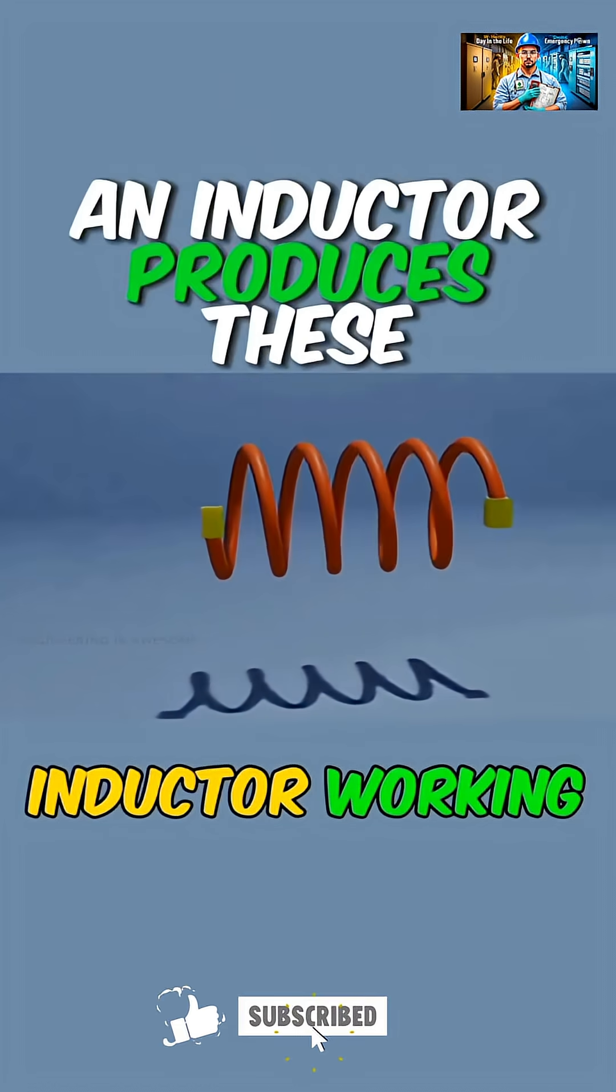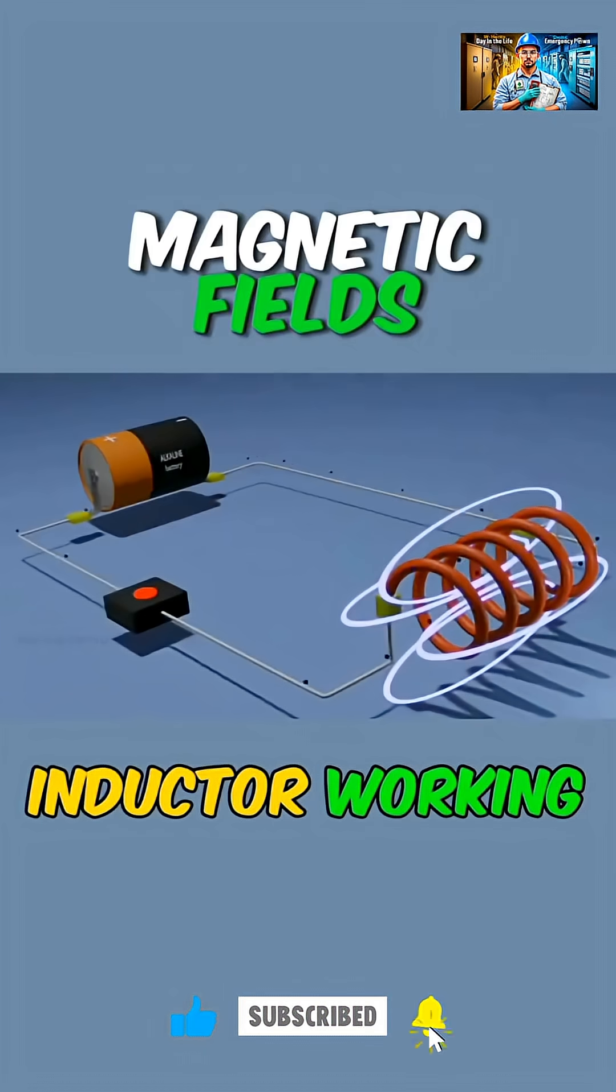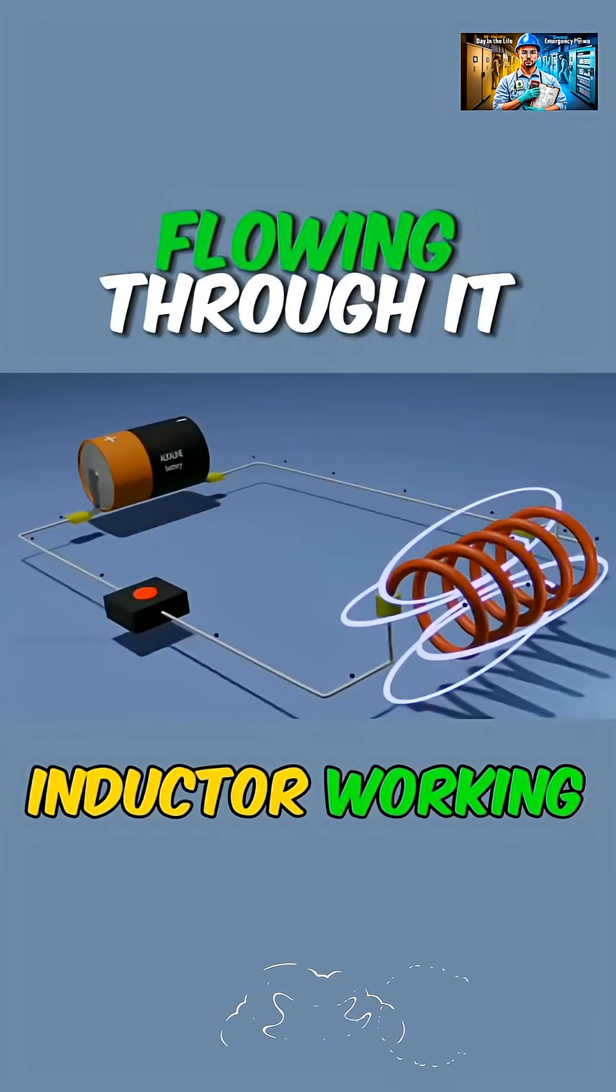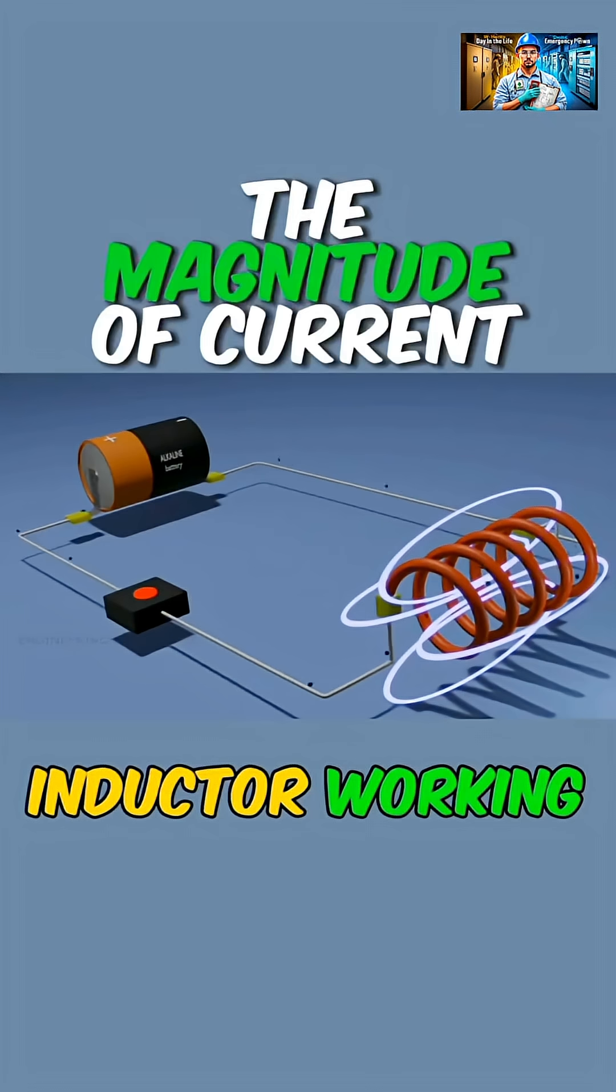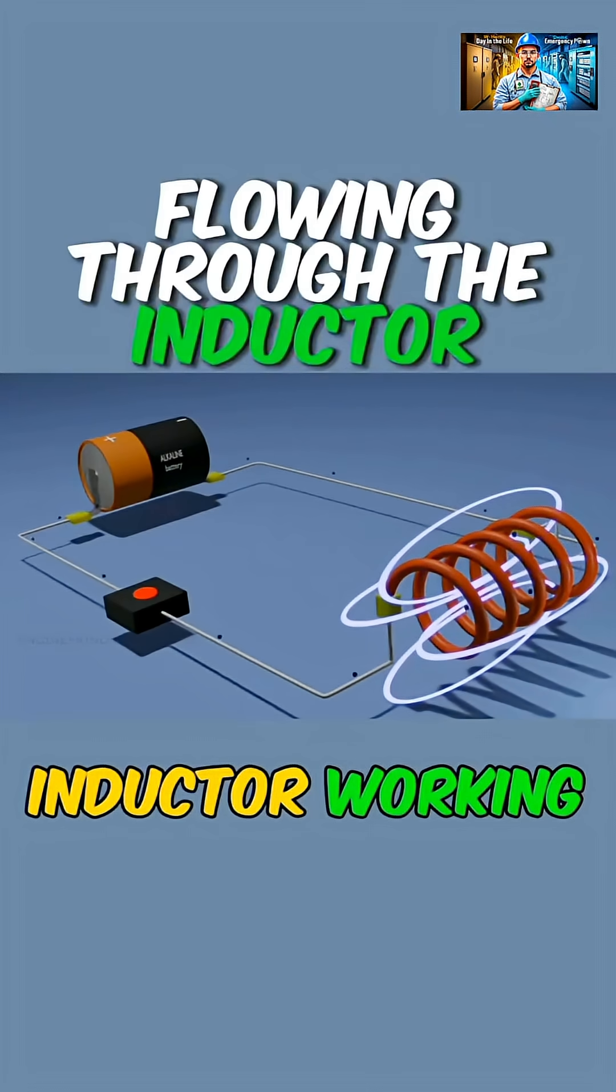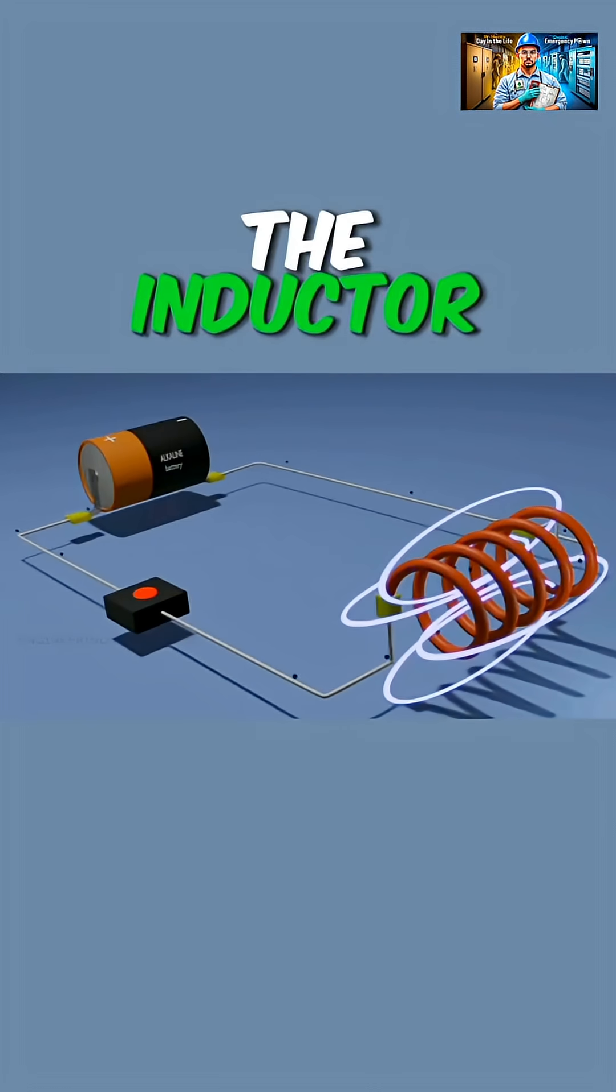An inductor produces these magnetic fields only when there is a current flowing through it. The strength of the magnetic field highly depends upon the magnitude of current flowing through the inductor and the number of turns of the inductor.